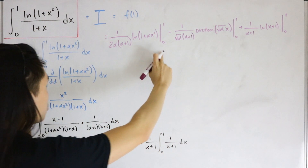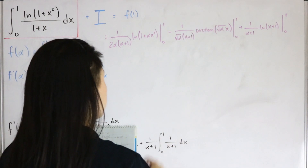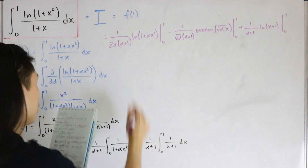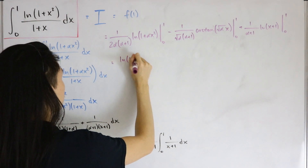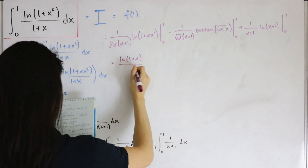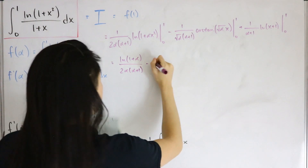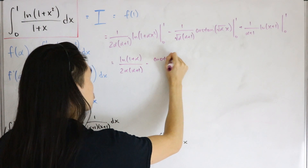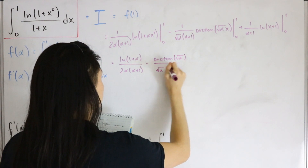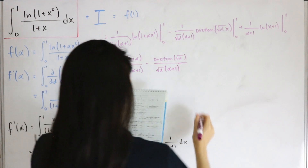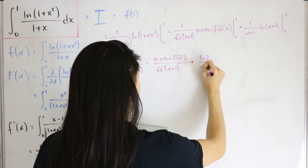Plugging in zero gives zero for everything, which saves a lot of time. Plugging in one and simplifying further: we get ln(1 + α) divided by 2α(α+1), then arctan(√α) divided by √α(α+1), and lastly ln(2) divided by α+1.